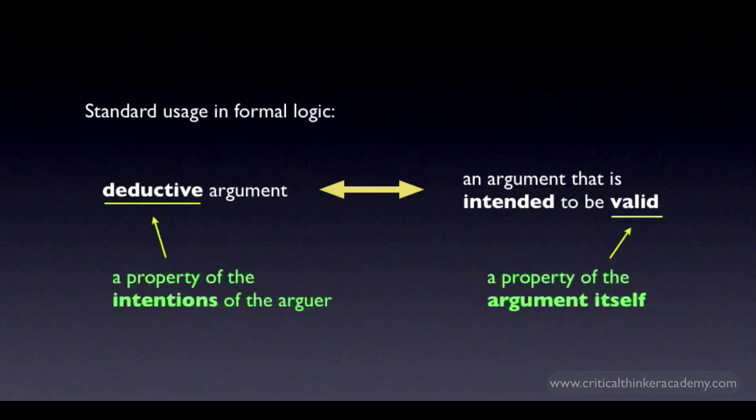While the terms deductive and valid are sometimes used interchangeably, they aren't strict synonyms. When you describe an argument as valid, you're saying something about the logic of the argument itself. When you describe an argument as deductive, you're saying something about the conscious intentions of the person presenting the argument—that they are intending to offer a valid argument.